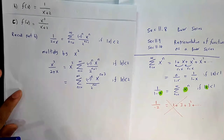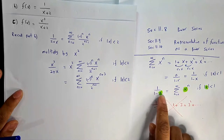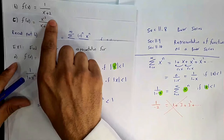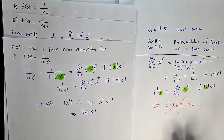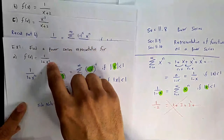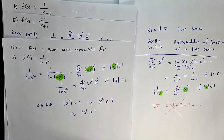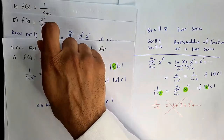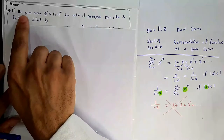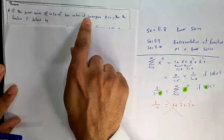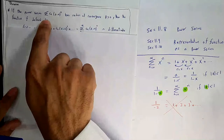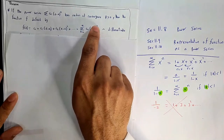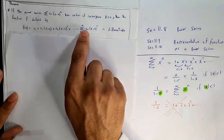Up to now we considered rational functions similar to 1/(1-x), or multiplied by powers of x. But can we differentiate or integrate these functions to get others? Yes. For example, integrating 1/(1+x²) gives arctan, and integrating 1/(x+2) gives ln|x+2|. This is due to the following theorem about differentiating and integrating power series.